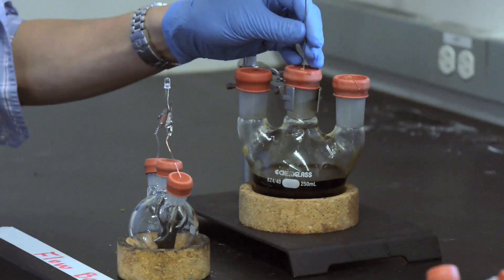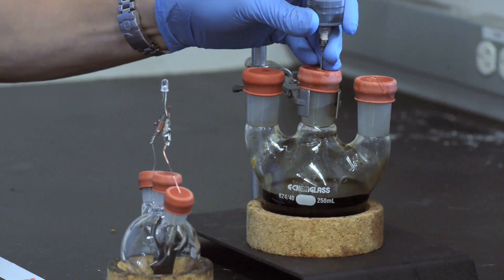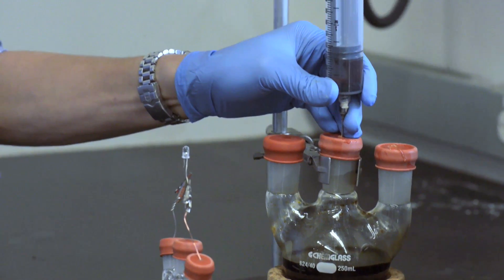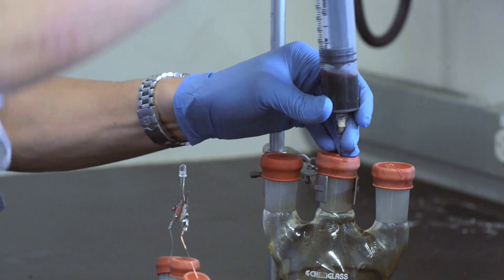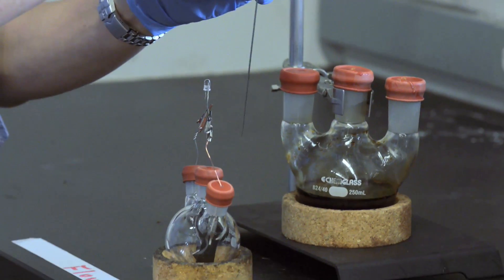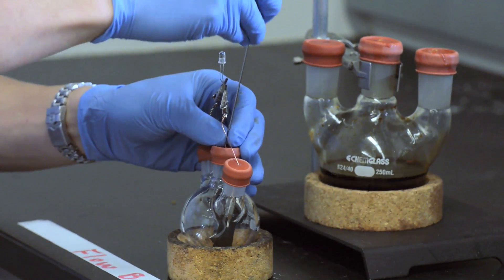So here I'm going to draw up some polysulfide from this big flask. And I'm going to put this catholite into this flask.